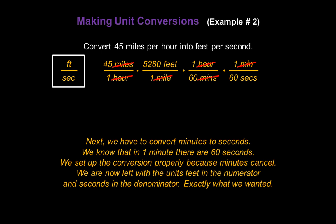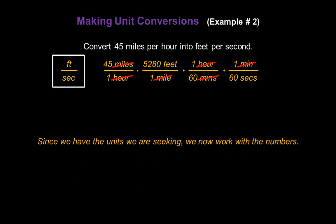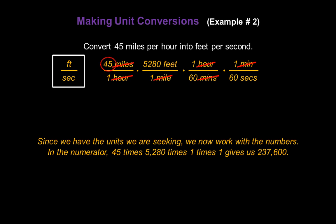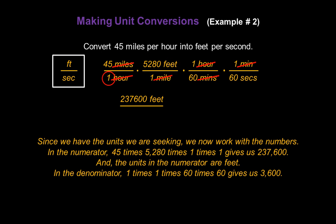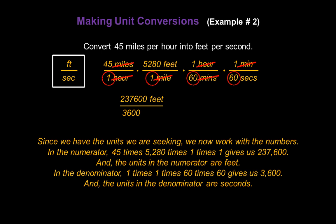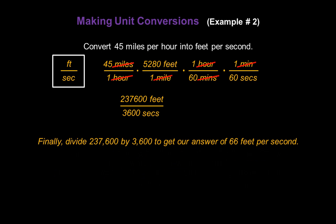We're now left with the units feet in the numerator and seconds in the denominator — exactly what we're trying to achieve. Since we have the units all taken care of, we now work with the numbers. In the numerator, 45 times 5,280 times 1 times 1 gives us 237,600, and the units in the numerator are feet. In the denominator, 1 times 1 times 60 times 60 gives us 3,600, and the units in the denominator are seconds. Finally, we divide 237,600 by 3,600 to get our answer of 66 feet per second.